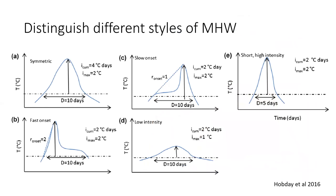Once we have definitions and metrics, we can distinguish different types of marine heatwaves that may have different effects. For example, Panel A shows a symmetrical event that warms above average and decreases evenly, while Panel B shows one that approaches very rapidly and then deteriorates slowly. Distinguishing these flavours matters because they may have different biological outcomes.